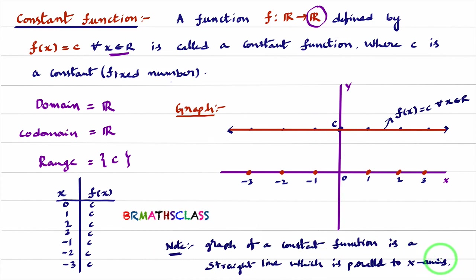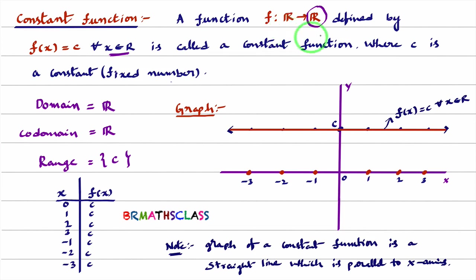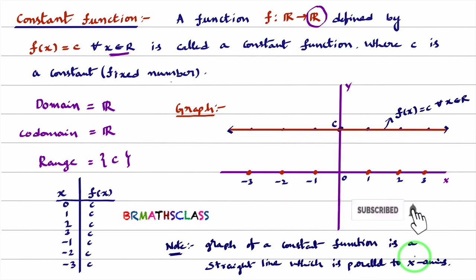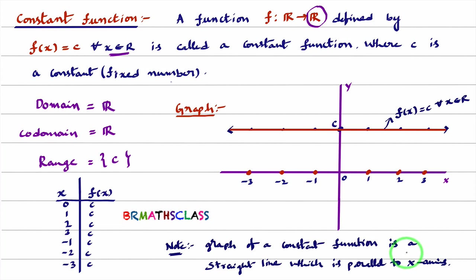To quickly recall what we learned: the definition of constant function — a function f from R to R defined by f(x) = c for any x belonging to R. Domain is the set of all real numbers; codomain is the set of all real numbers; range is a singleton set containing constant c. The graph is a straight line parallel to the x-axis. In the next class, we will learn the definition of identity function, its domain, codomain, range, and graph.